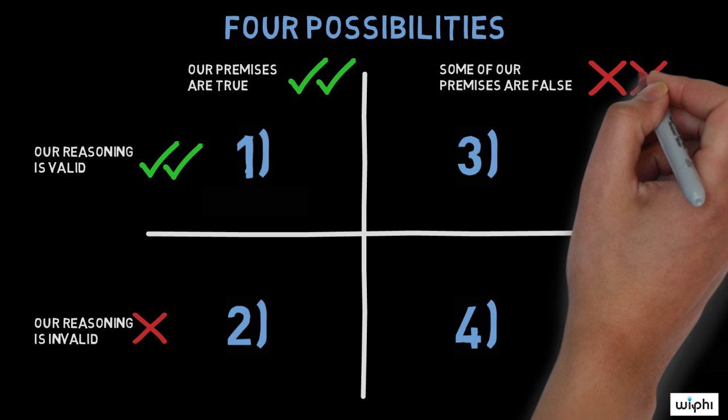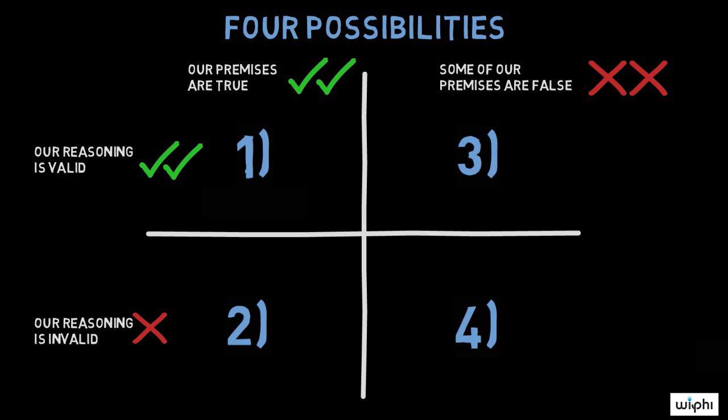And finally, possibility four, we may have our facts wrong, some of our premises are false, and we may use them improperly, our reasoning is invalid.